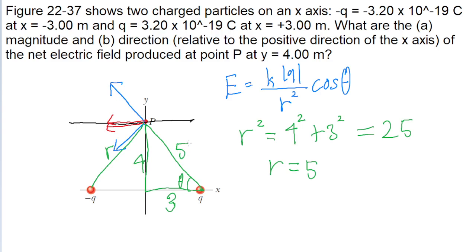Also note that the cosine of an angle is equal to its adjacent leg divided by the hypotenuse. So this cosine theta term can be more simply written as 3, the adjacent leg, divided by the hypotenuse, 5.